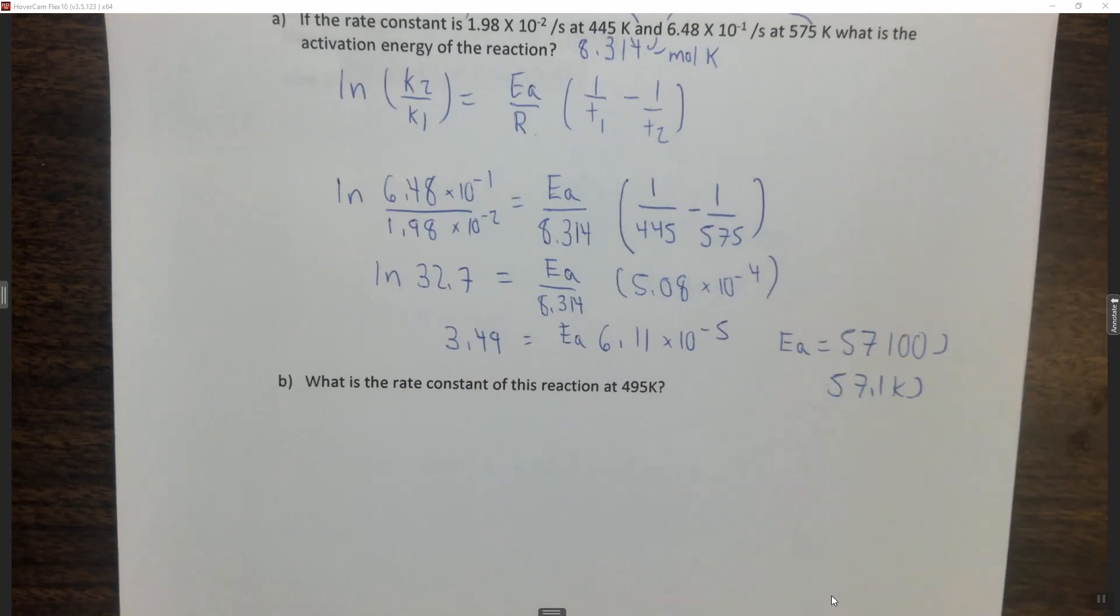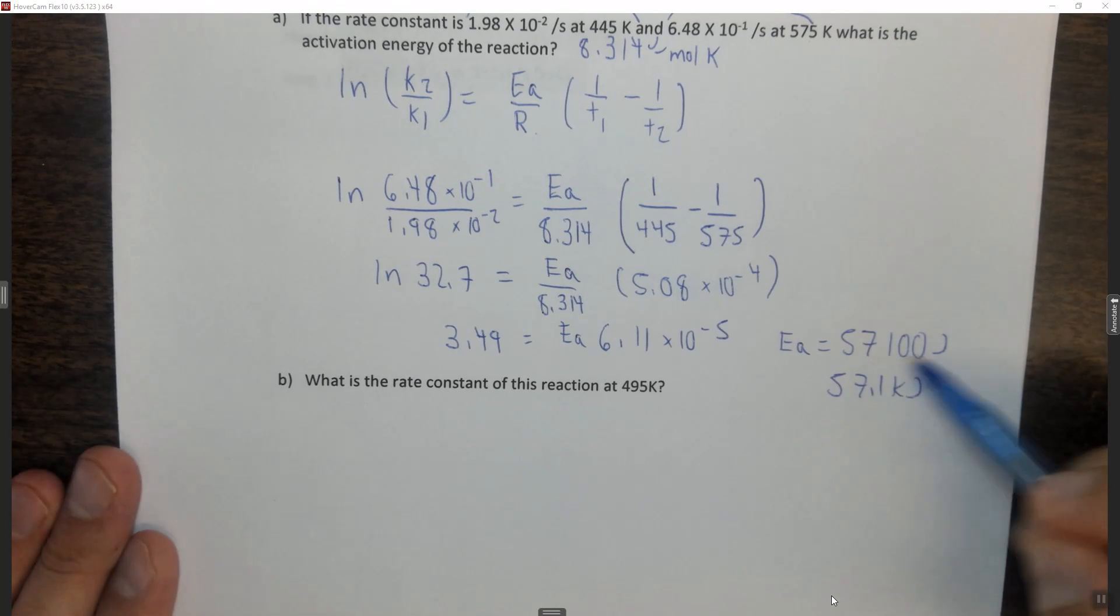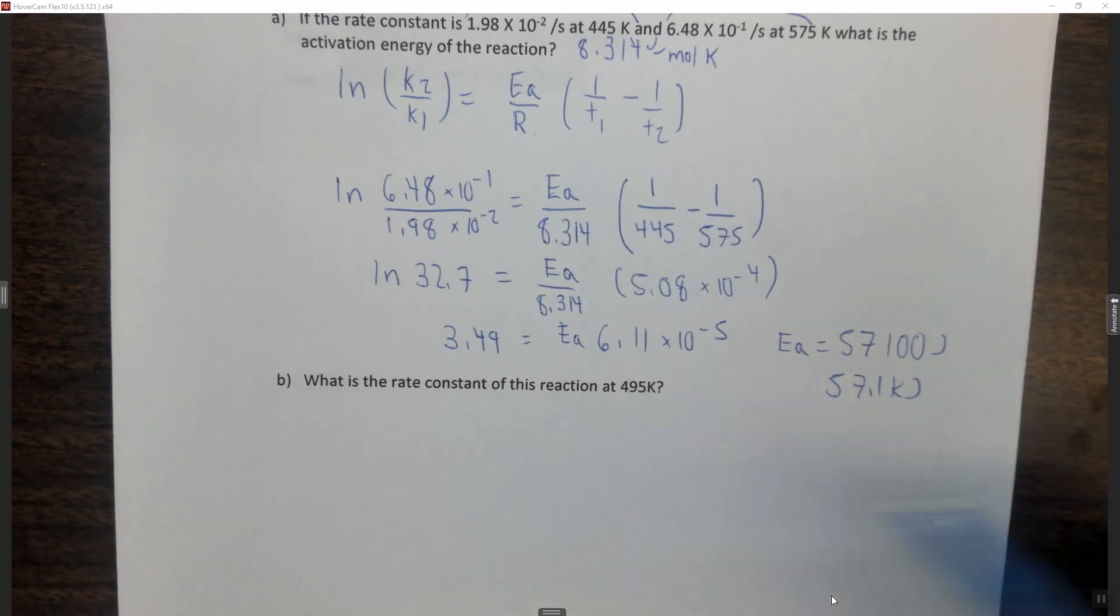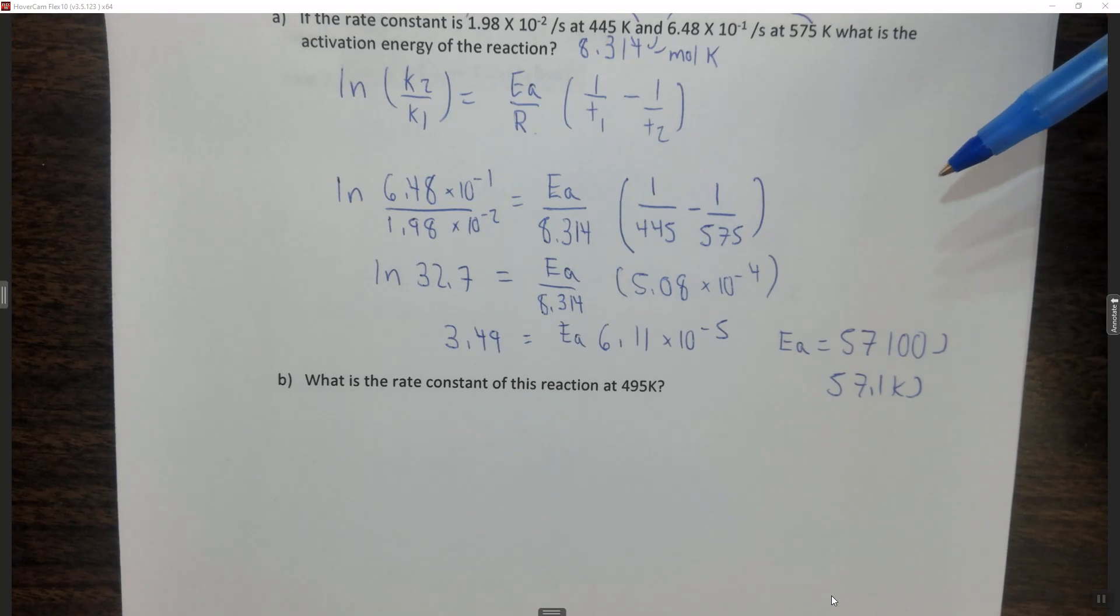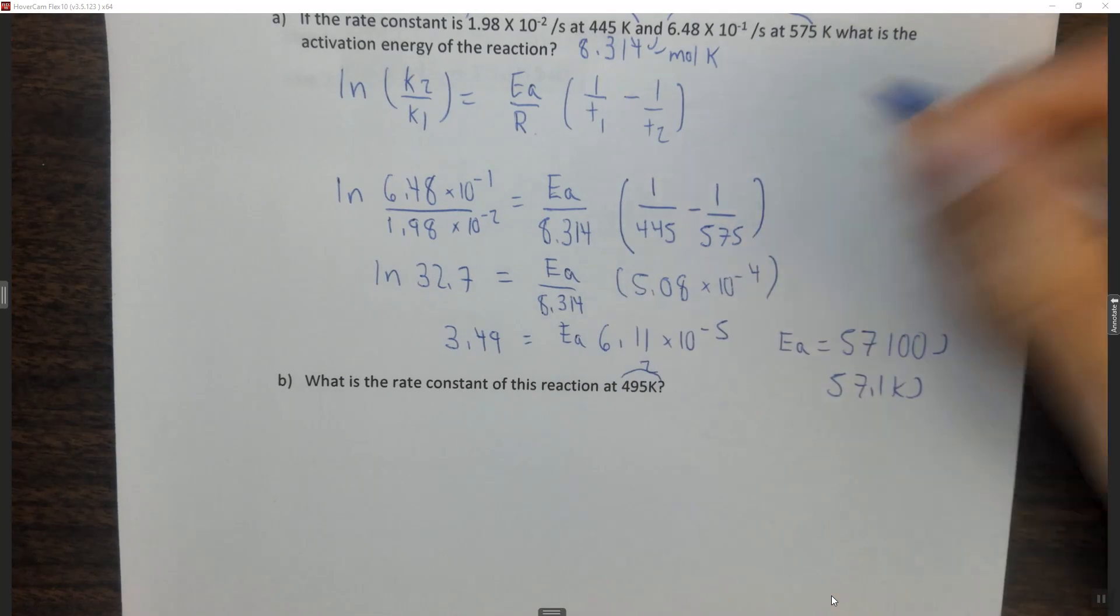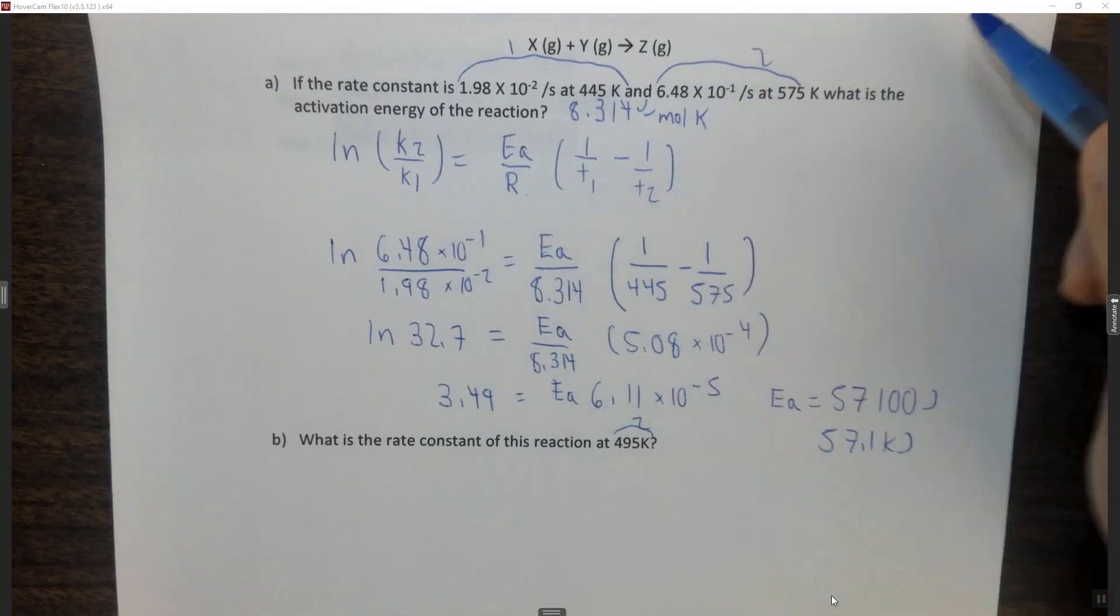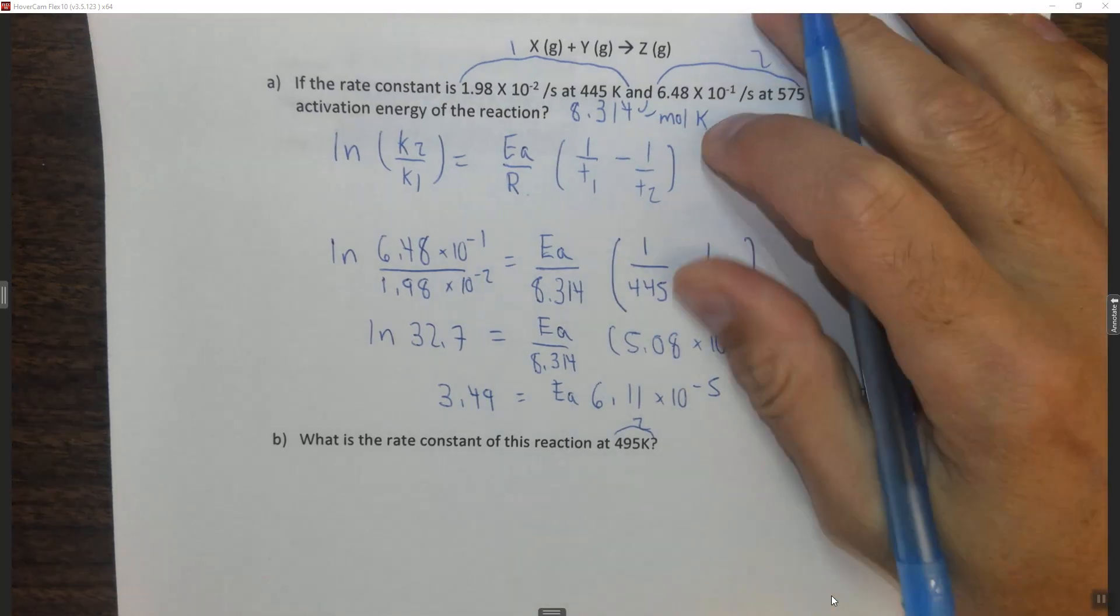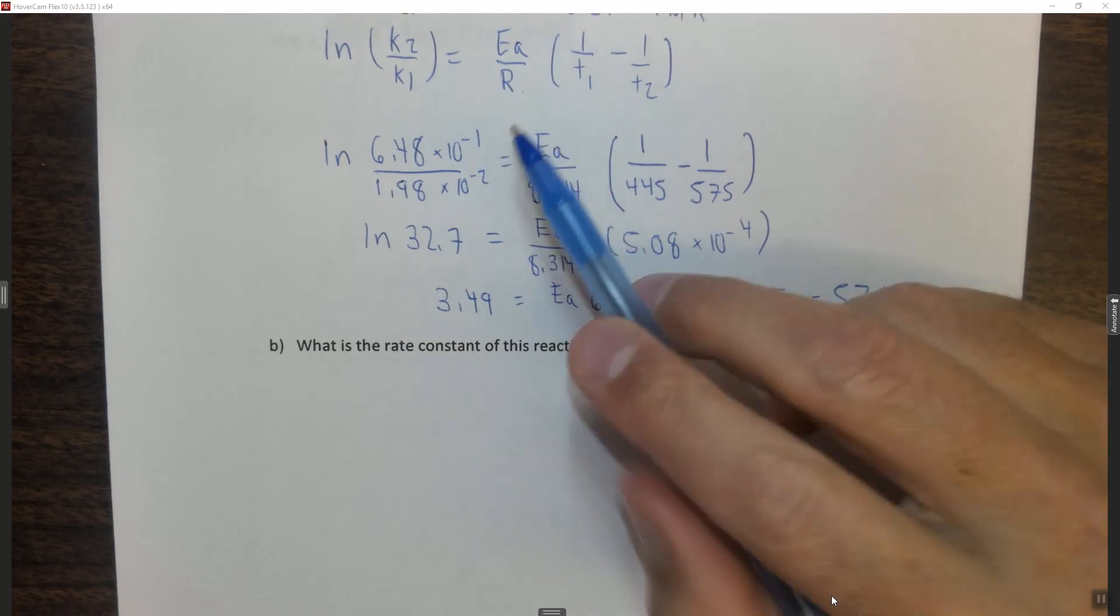Part B is pretty much the same as A, except we need to use the activation energy that we just found. Make sure that it's in joules, not in kilojoules. I should note that I rounded this to three sig figs, which is why I left zeros here. It says what is the rate constant for the reaction at 495K. I'm going to use 1 and make this as the new 2. I'm not going to use this 2 at all. So how do I do that? It's the exact same equation that we used before.